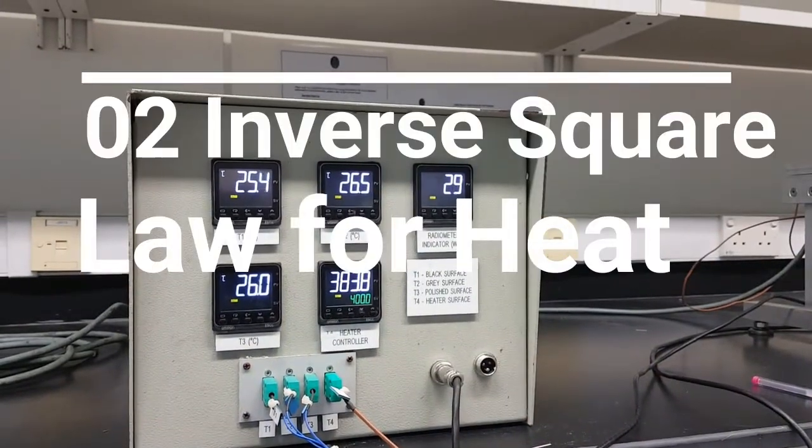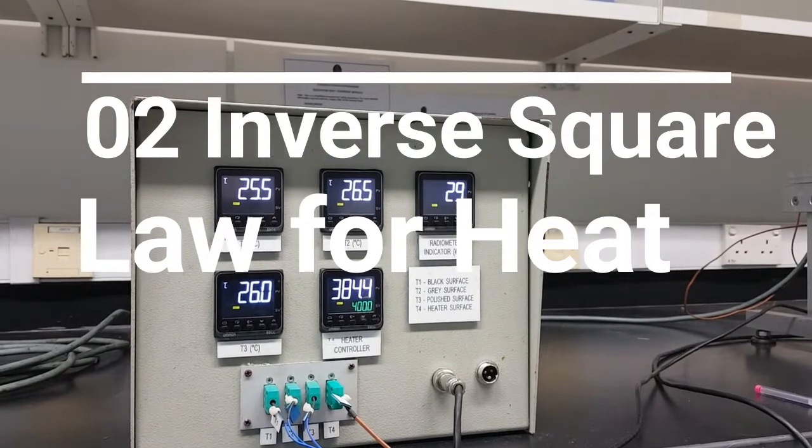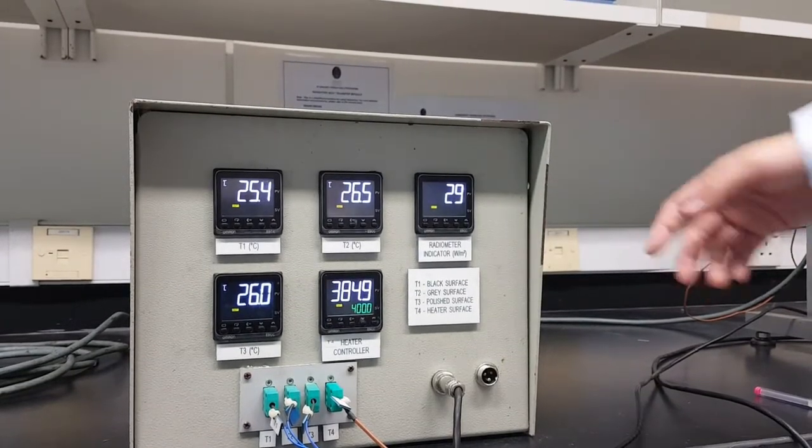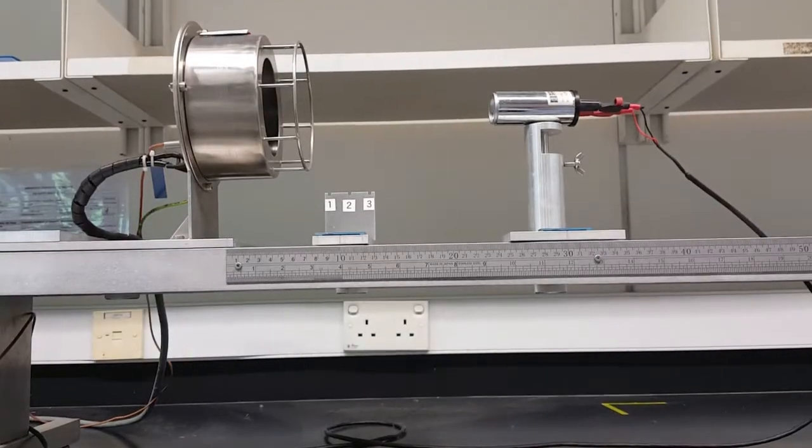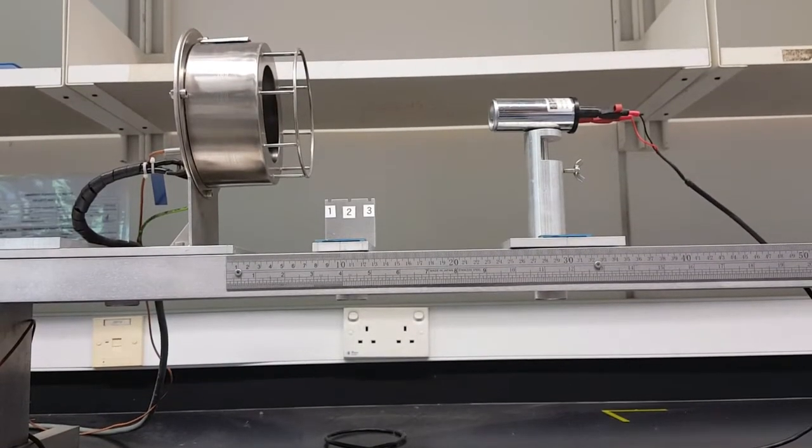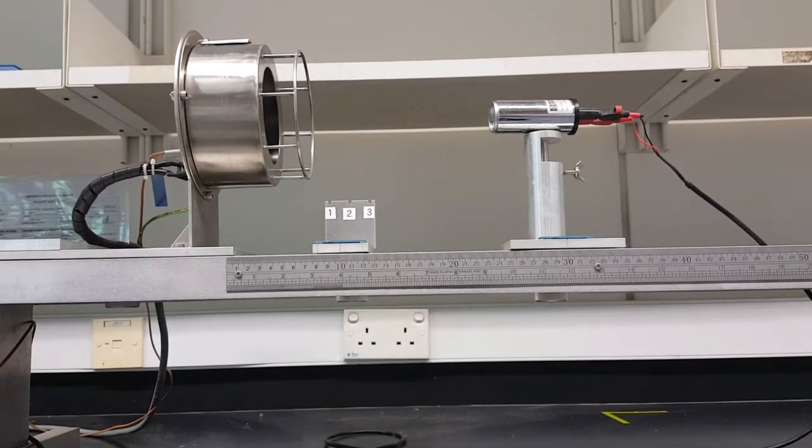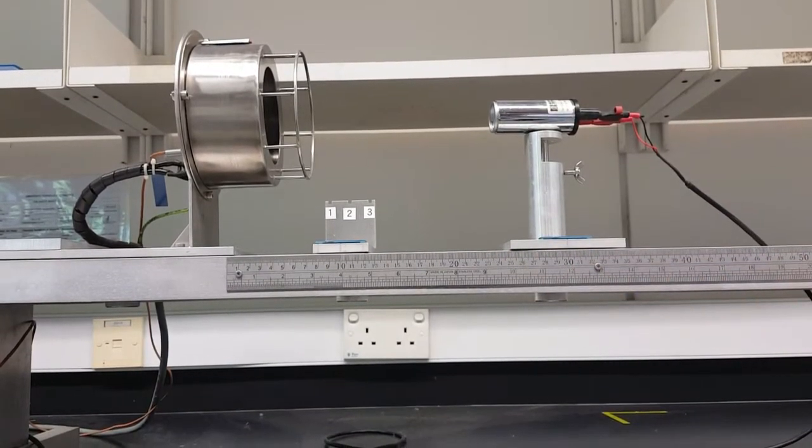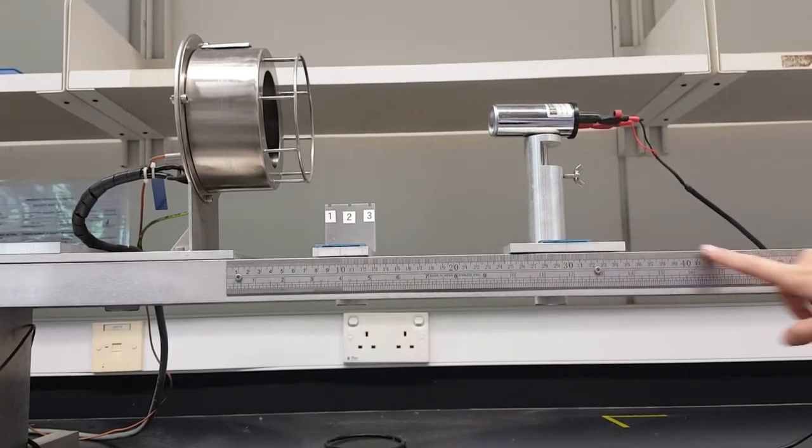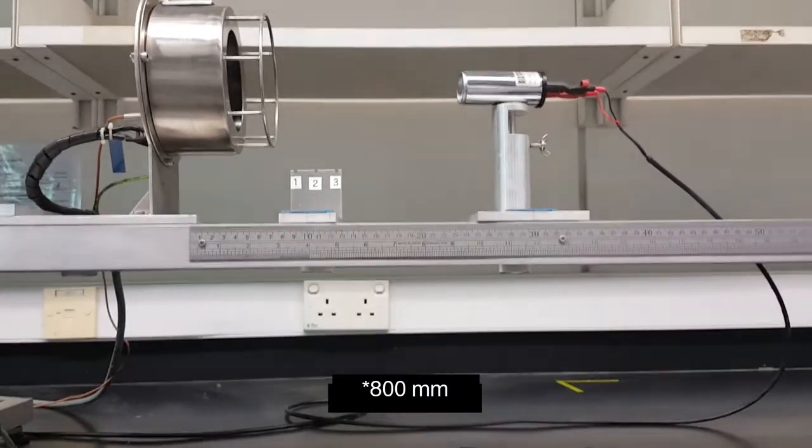For part two of the experiment, which is the inverse square law of heat, we have to set the temperature at a constant temperature of 400 degrees Celsius. To measure the intensity of the radiation, we have to adjust the radiometer at different distances from 300mm up to 80mm.